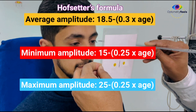Now you have understood how a simple test like NPA is used to calculate the amplitude of accommodation. By comparing this value with Hofstetter's formula, we can decide whether the patient has average, minimum, or maximum accommodation.